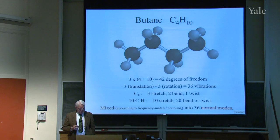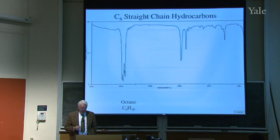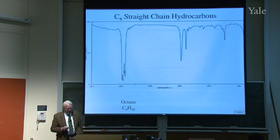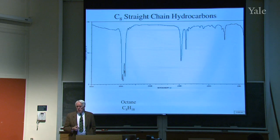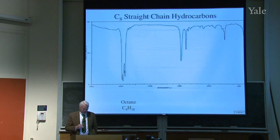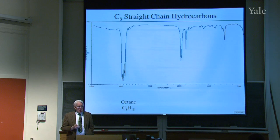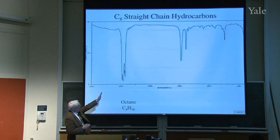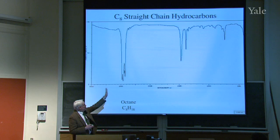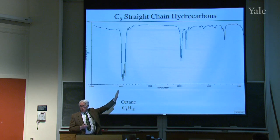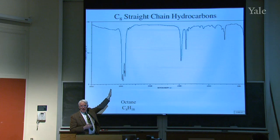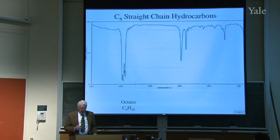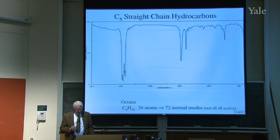Let's see if we can understand something about these normal modes using a spectrum of a hydrocarbon, C₈H₁₈. You've likely seen a spectrum like this in lab. Notice that there are peaks at the far left around 3000 cm⁻¹, and all others are at 1500 cm⁻¹ or below. The high-frequency peaks at 3000 are C–H stretches — because hydrogen is so much lighter.